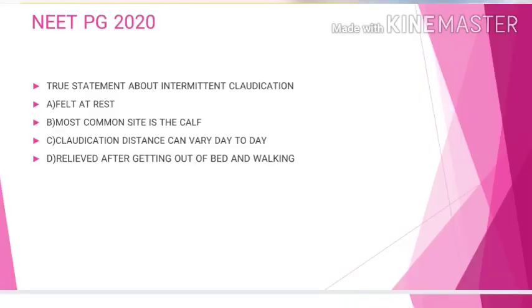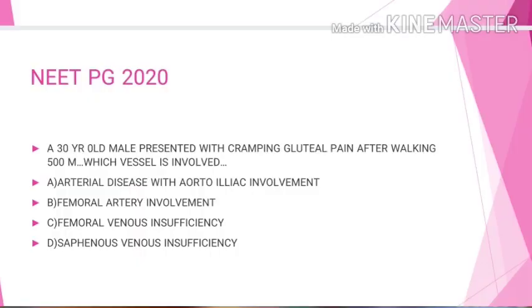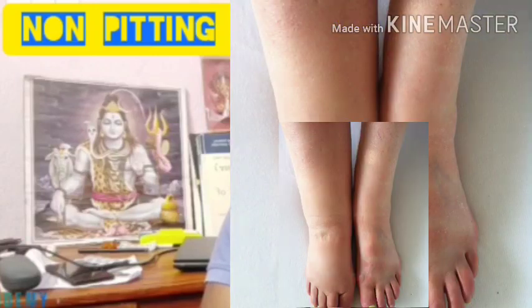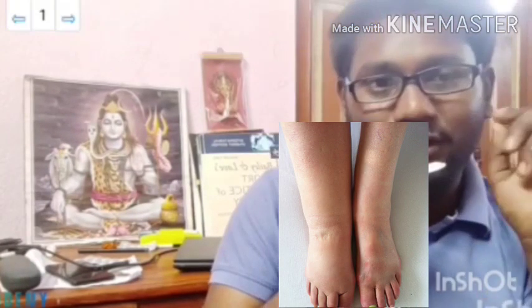The three direct questions in NEET PG 2020 were from Buerger's disease: one question was from claudication — they asked a few statements about claudication and asked which one is wrong — and another was from the localization of blockage in Buerger's disease. The fourth question was about non-pitting edema in the leg due to lymphedema, which anyone with basic medical knowledge can easily solve.